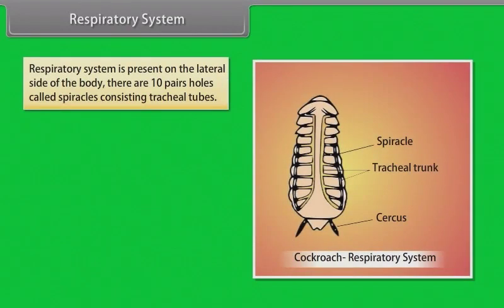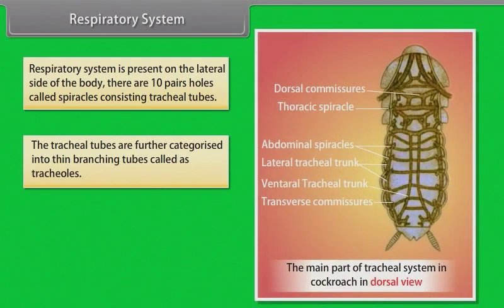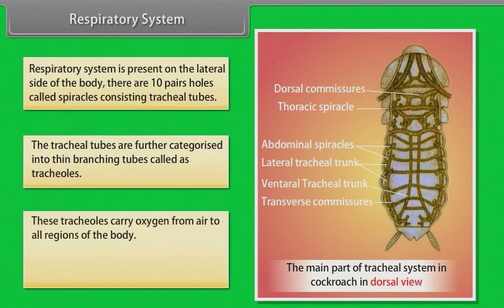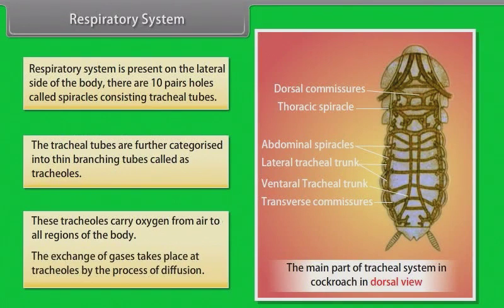The respiratory system is present on the lateral side of the body. There are 10 pairs of openings called spiracles consisting of tracheal tubes. The tracheal tubes are further branched into thin tubes called tracheoles, which carry oxygen from air to all regions of the body. The exchange of gases takes place at the tracheoles by the process of diffusion.